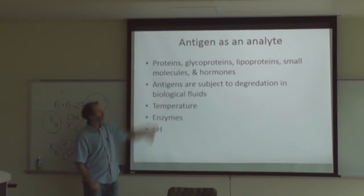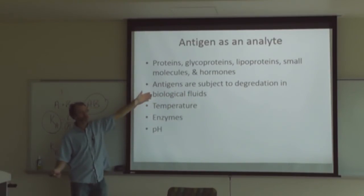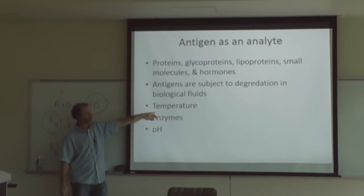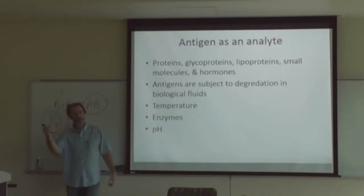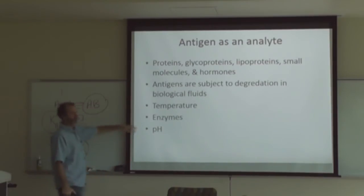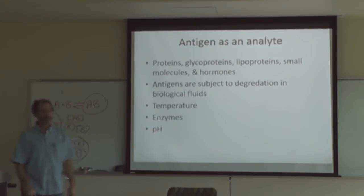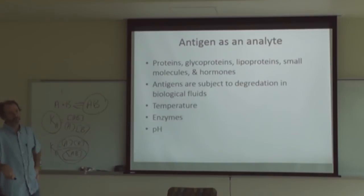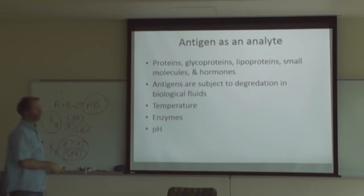Antigens are subject to degradation in biological fluids, especially proteins, glycoproteins, lipoproteins, and hormones. Enzymes will degrade those — proteases in biological fluids will chew proteins up. Temperature can affect degradation of antigens. pH will also affect not only the stability and shape of the antigen, but also the interaction between the antigen and the antigen-binding site on the antibody, because you're going to alter charges there.